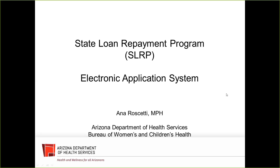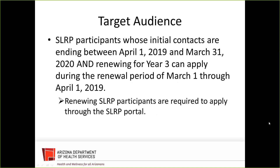Our target audience for today's webinar is state loan repayment program participants whose initial contracts are ending between April 1, 2019 and March 31, 2020. All participants renewing for year 3 can apply during an open renewal period which will begin on March 1 through April 1 of 2019. This is the only time you will be able to submit a year 3 renewal application. We are not going to accept any paper applications — we are fully electronic.